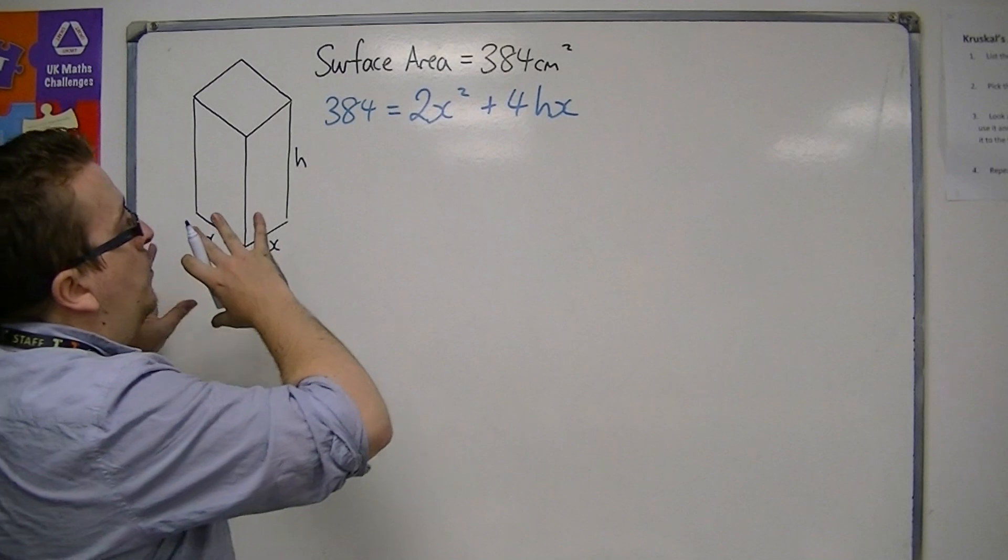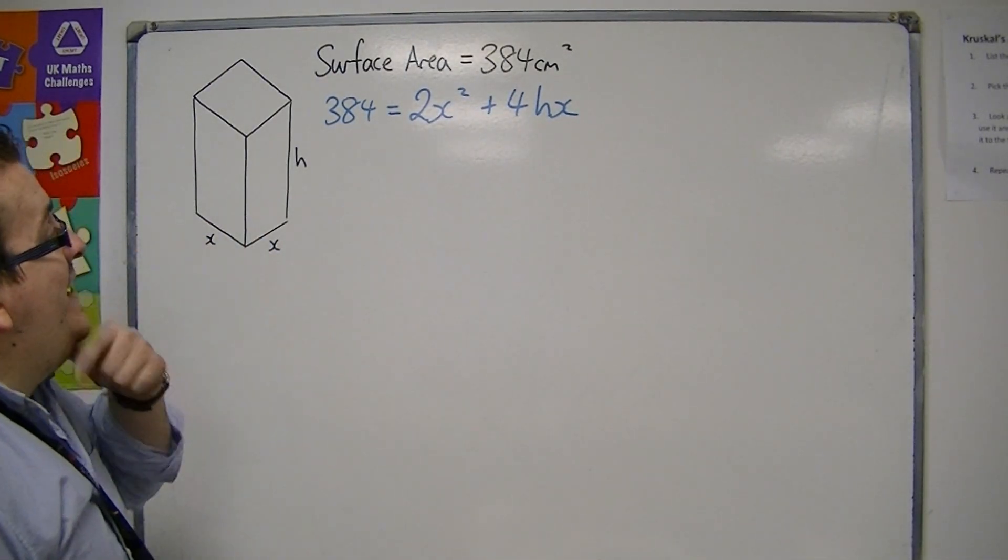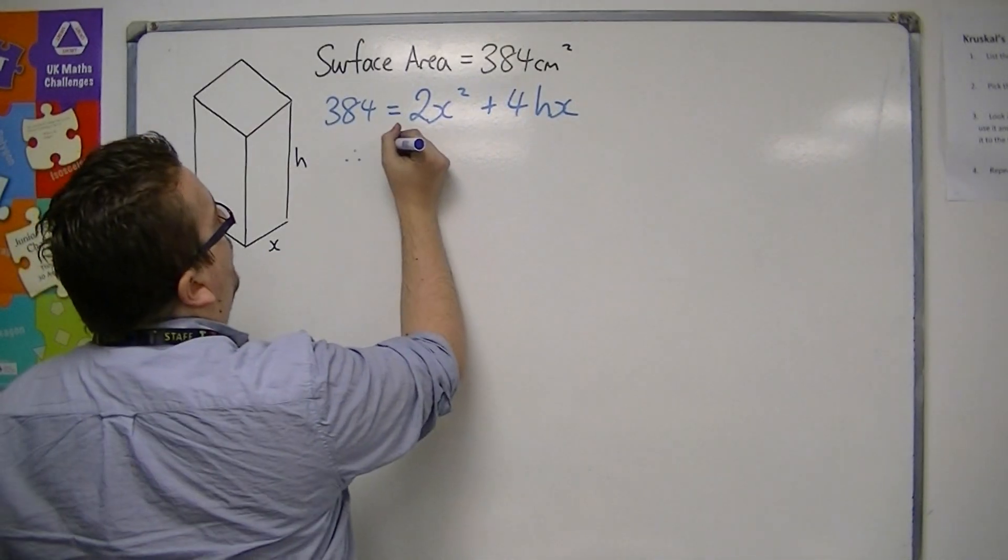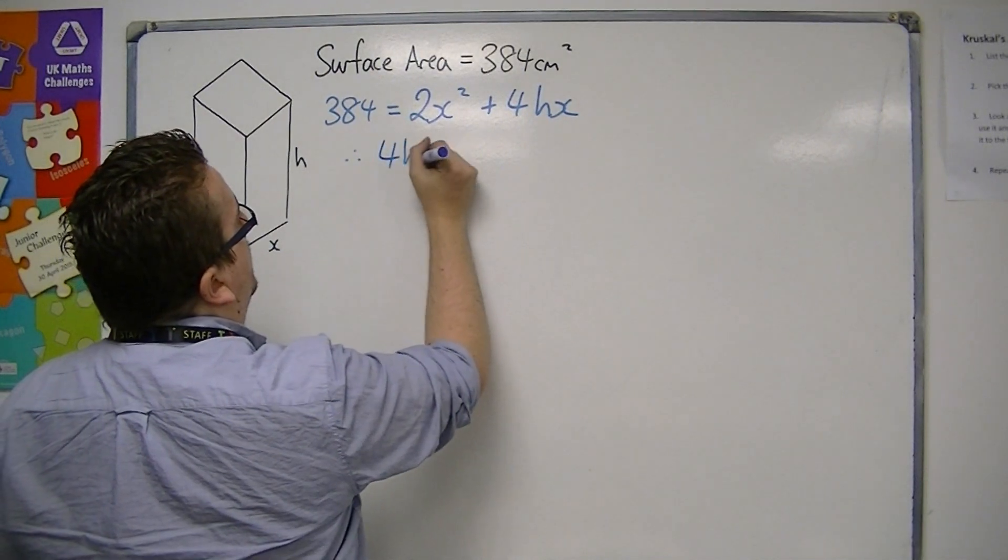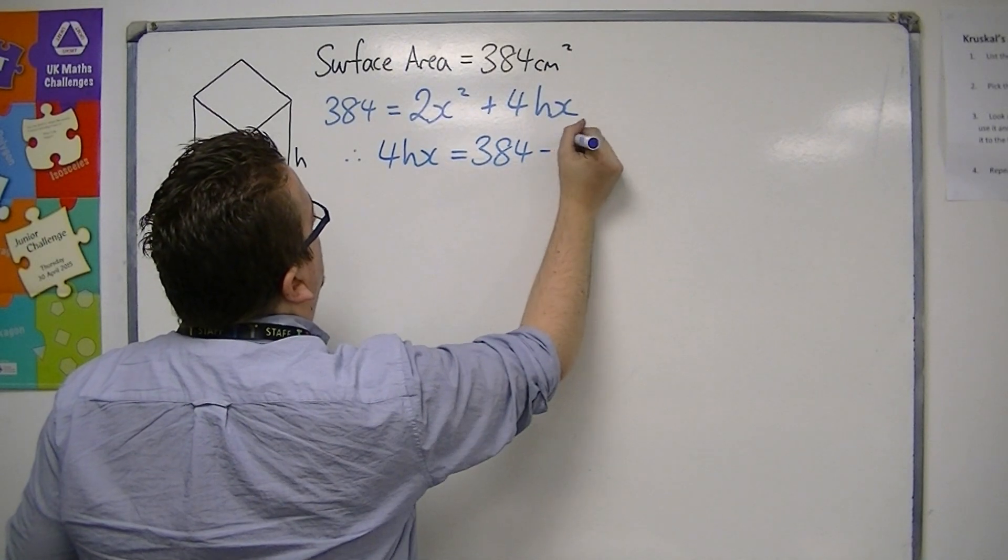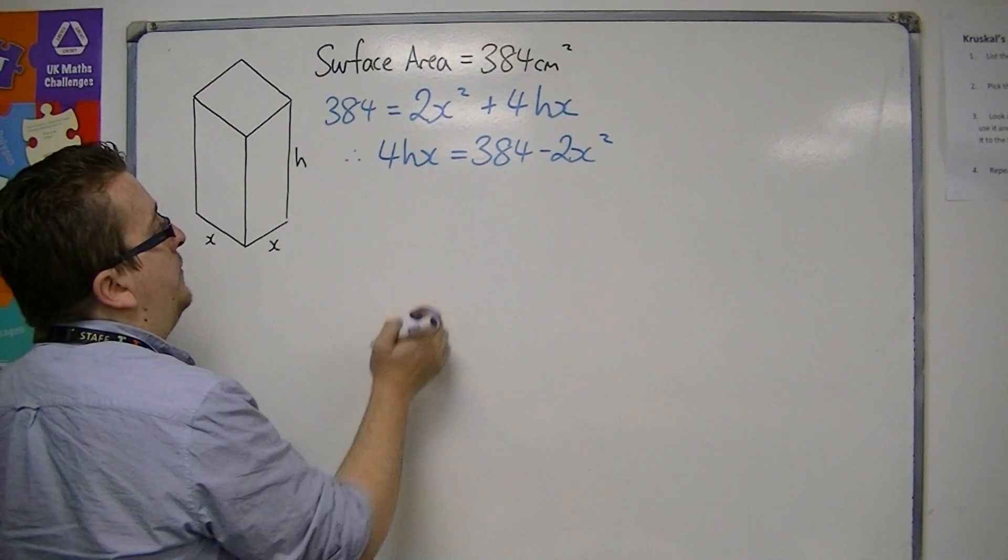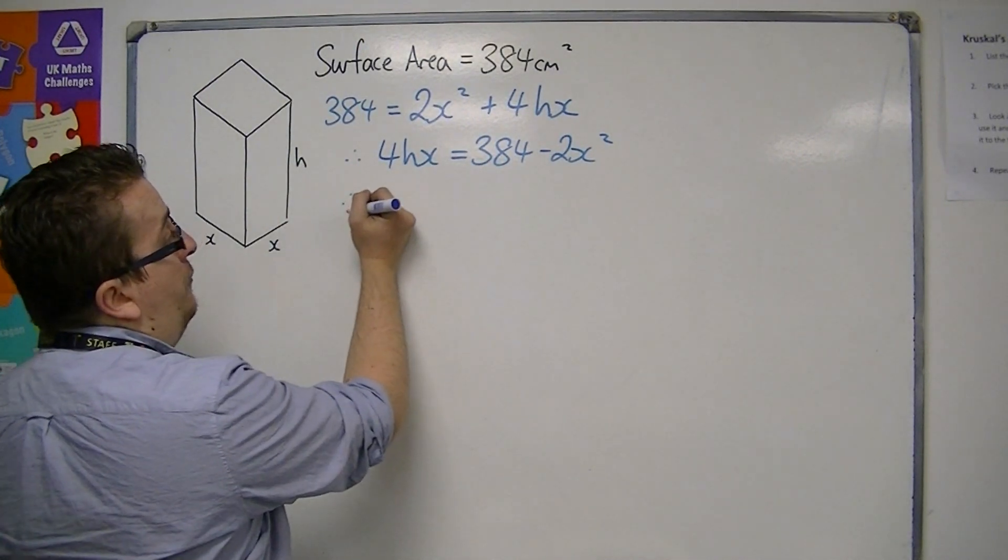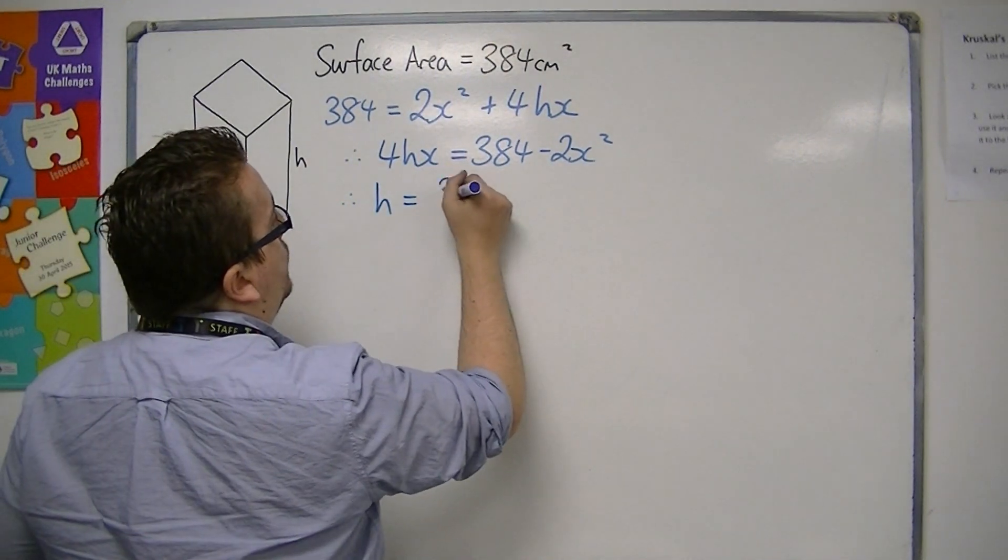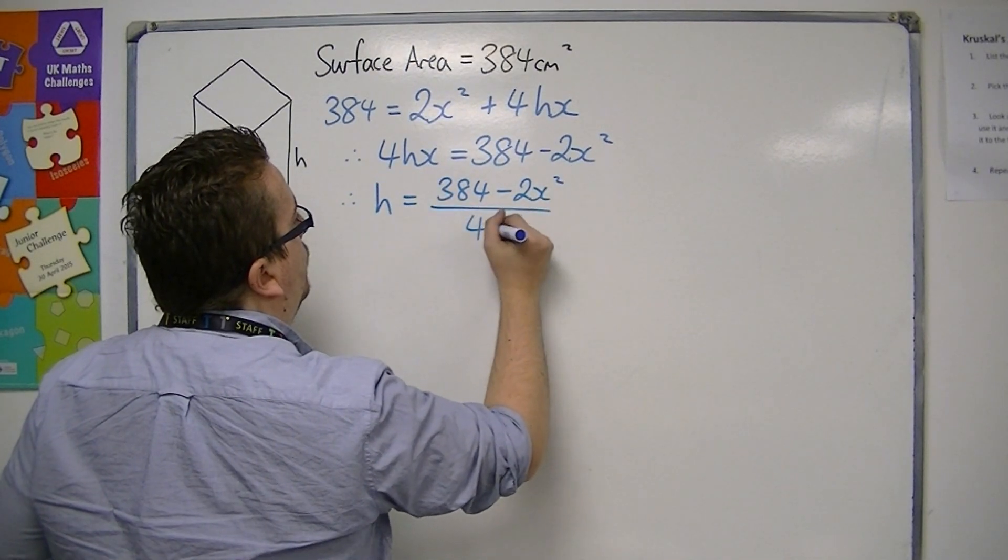Now, I can't really do much with that at the moment to find the volume unless I get h equals. So if I rearrange it, I can get 4hx is 384 minus 2x squared. If I divide through by 4x, I can get h is equal to 384 minus 2x squared over 4x.